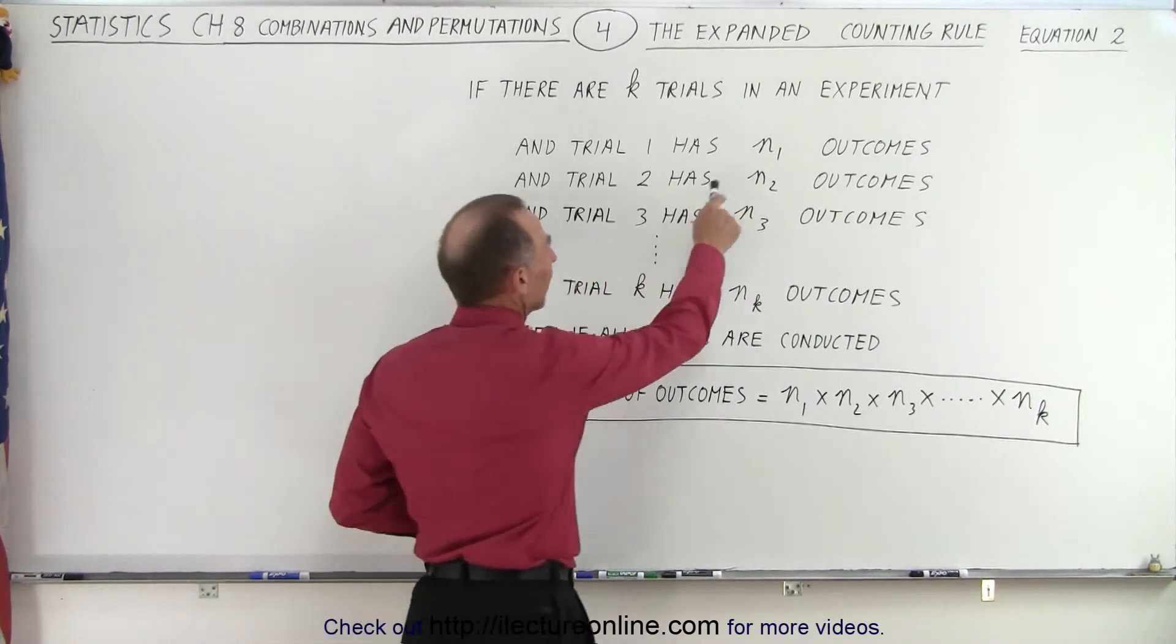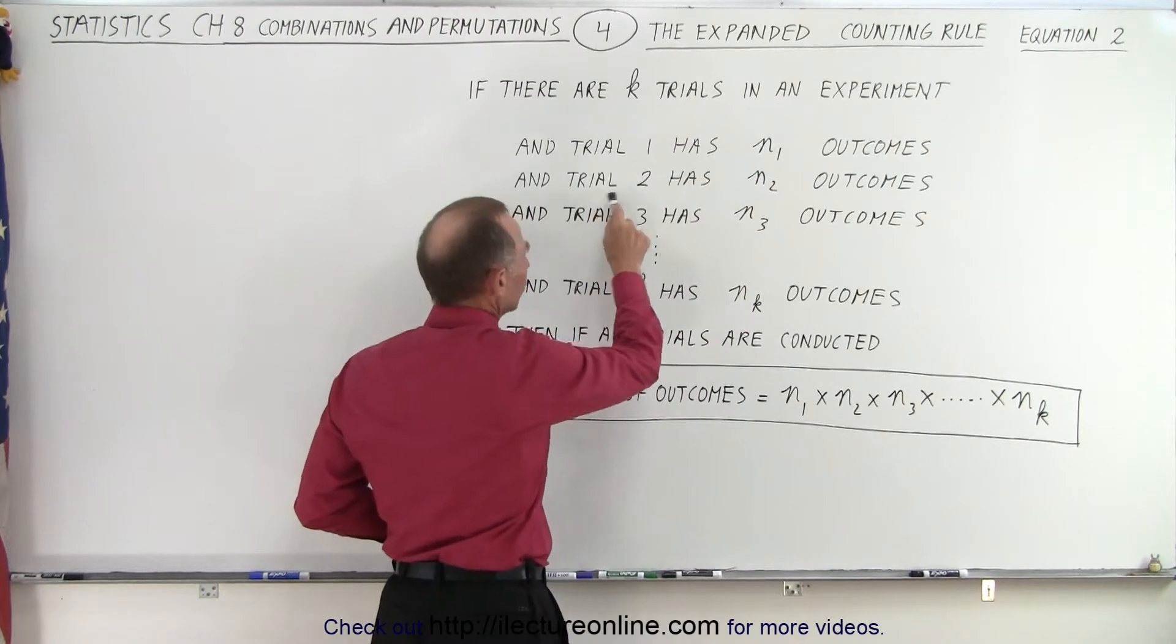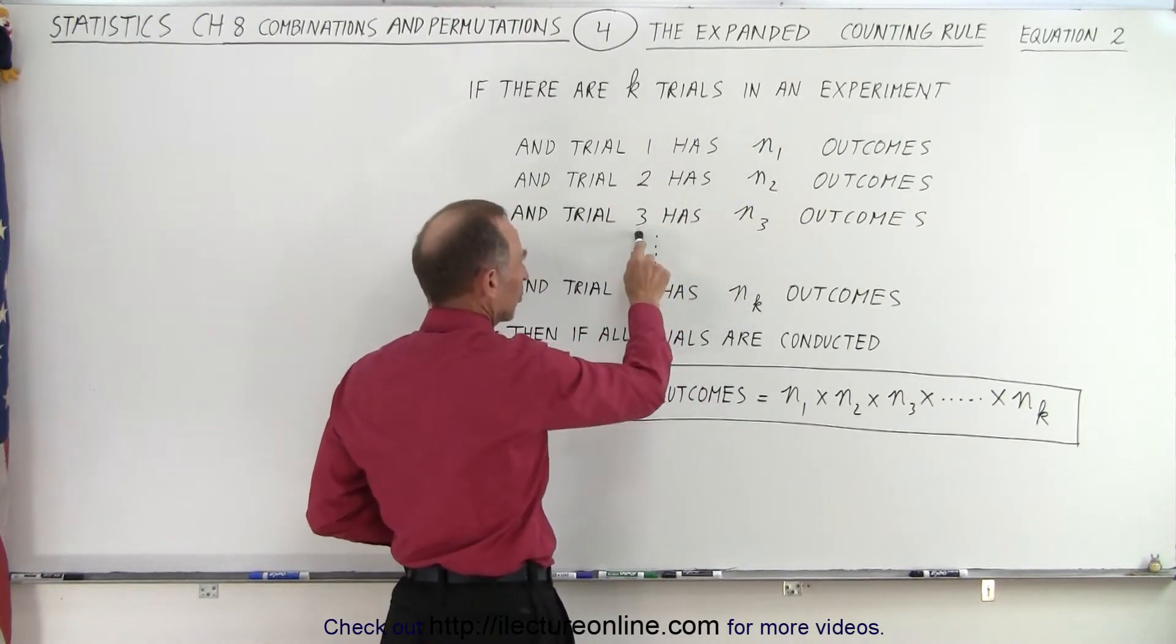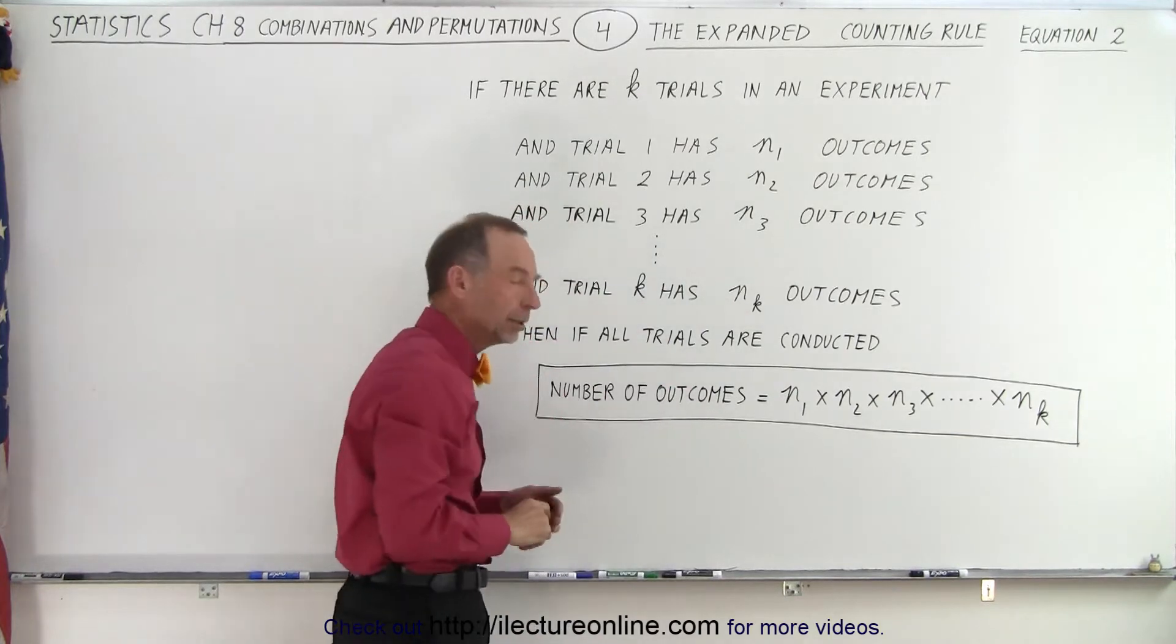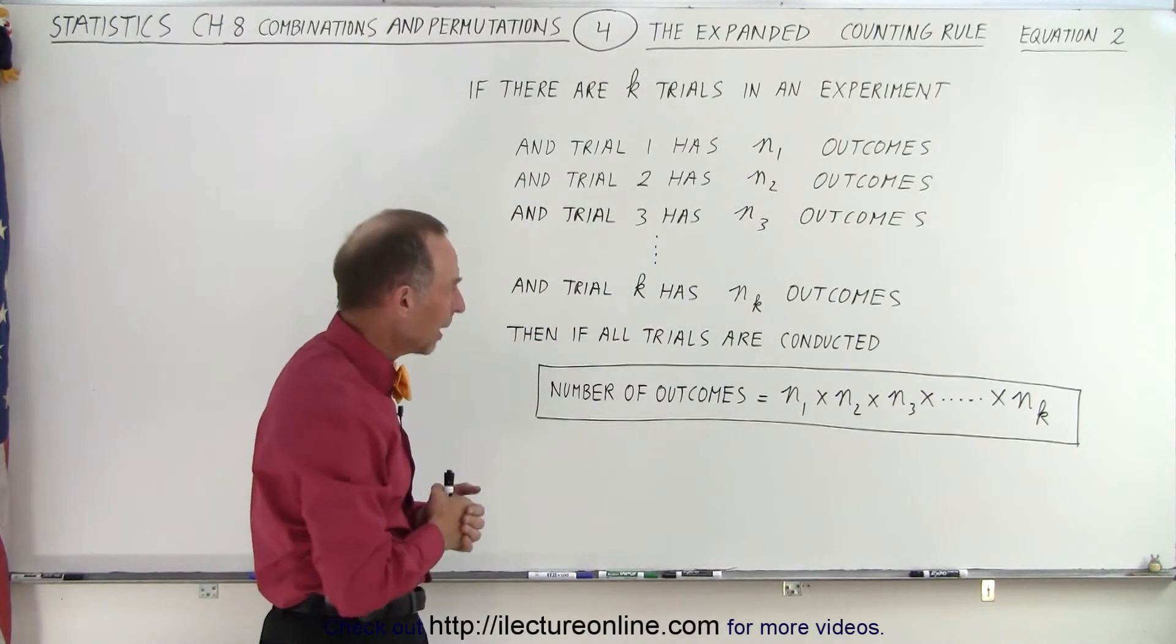For trial 1, there are n1 outcomes. For trial 2, there are n2 outcomes. For trial 3, there are n3 outcomes. All the way down to the k trial, there are nk outcomes.